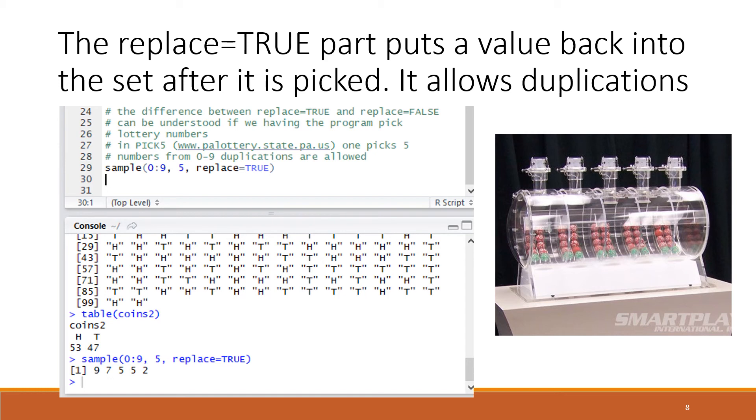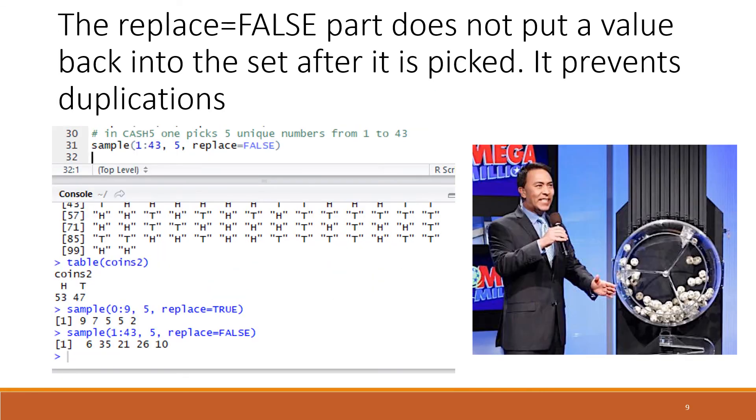A different game is Cache Five. In Cache Five you have possible numbers between 1 and 43 and you're picking five of them. In this case replace is false, so once you pull a number like 6, it cannot be pulled again. Replace is false and you'll find no duplication in these results.